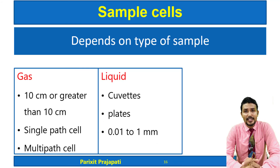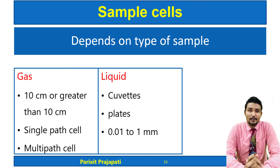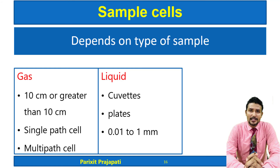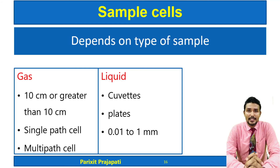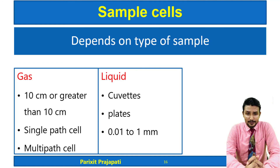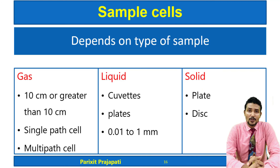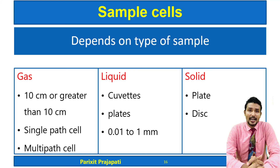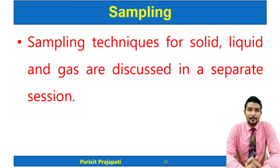For liquid or solution samples, cuvettes and plates with a thickness of 0.01 to 1 mm are used. Nowadays very compact sample cells are used with the advancement of technology, which will be discussed in a session on instrumentation advancements. For solid samples, the material can be placed between plates or in a disk. Since sampling is a very important part of recording IR spectra and involves many types of samples — liquids, solids, and semi-solids — a dedicated separate session covers this topic.